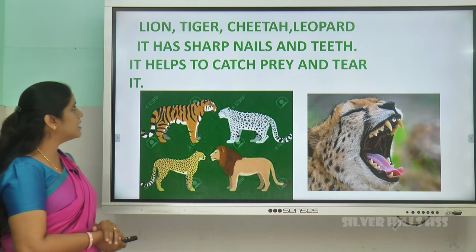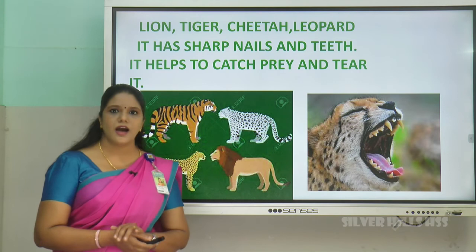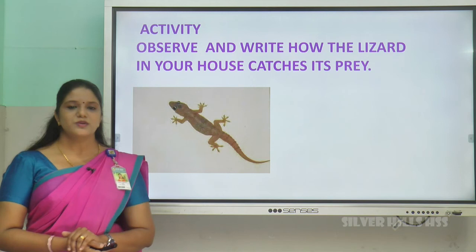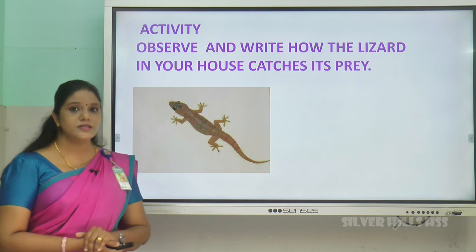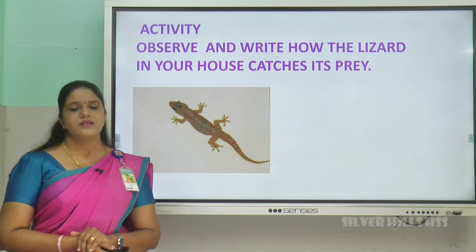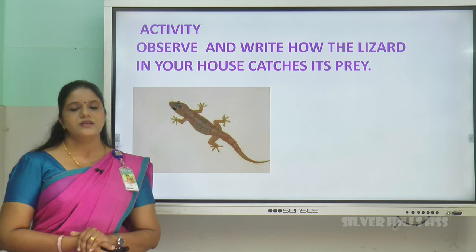Lion, tiger, cheetah, leopard, etc. have sharp nails and teeth; with the help of these, they catch prey and tear it. So dear children, I am giving an activity for today: observe and write how a lizard catches its prey. All of you do this activity. So I am going to wind up this class now. Thank you so much.